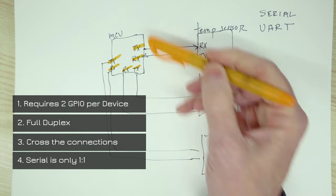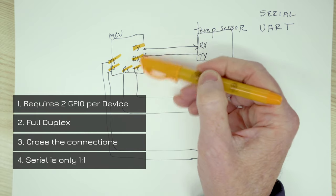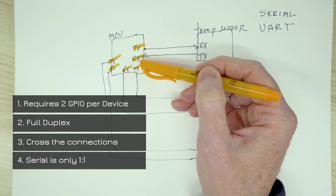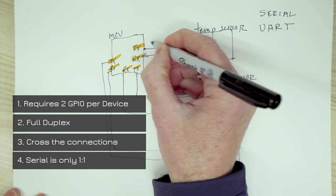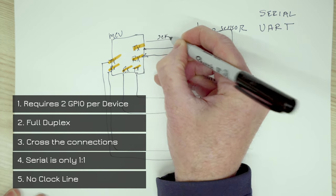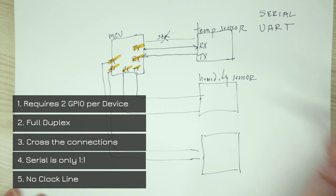The final thing to consider is that there's no clock line. So normally we would have some kind of SCK line or something like that. Since that does not exist,